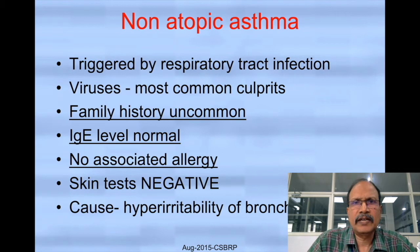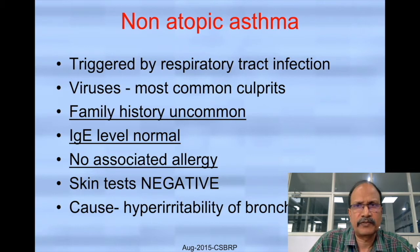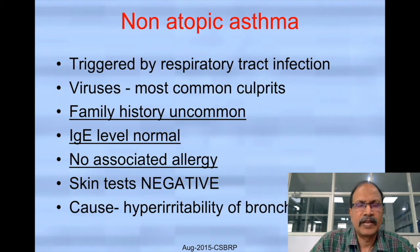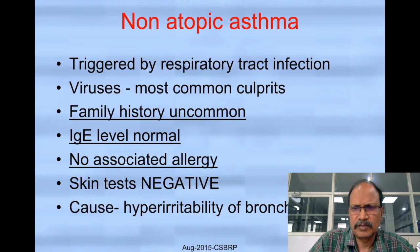Coming to the second category of asthma — non-atopic. These patients will not have any family history of asthma or allergies, their serum IgE levels will be normal, and they are not associated with any allergic manifestations. Usually skin tests will be negative, and it is due to hyper-irritability of the bronchial passages towards some agent.